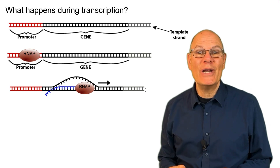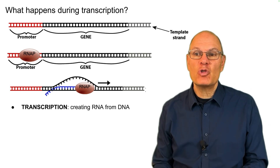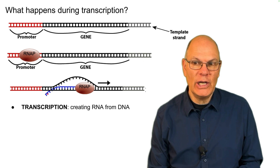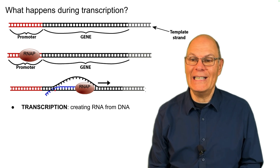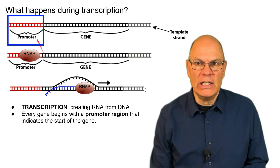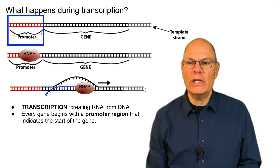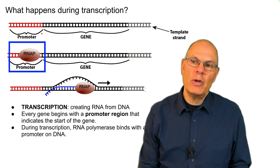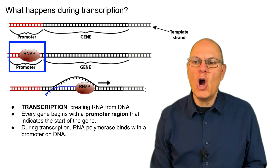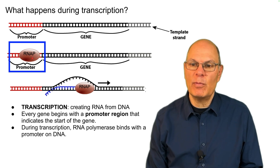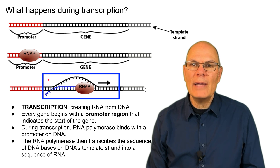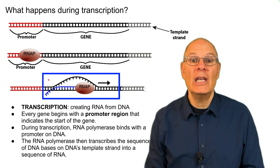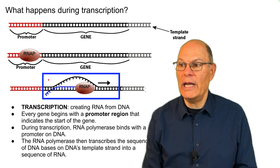What happens during transcription? Transcription is the creation of RNA, shown here in blue, from DNA. Every gene begins with a promoter region that indicates where the gene starts. During transcription, an enzyme called RNA polymerase binds with the promoter on DNA, then transcribes the sequence of DNA bases on DNA's template strand into a sequence of RNA.